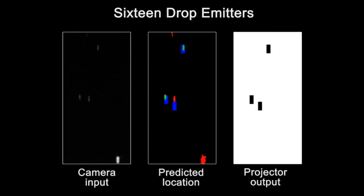This video shows multiple drops released from different drop emitters. The system is able to track and predict the future locations of each drop at 120 Hz.